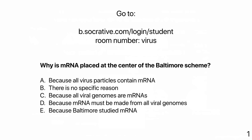Let's do a quick quiz. Why is mRNA at the center of the Baltimore scheme? The answer is D: because mRNA must be made from all viral genomes. 92% of you got that. Some said because all particles contain mRNA — that's not correct. As you see from the Baltimore scheme, those seven different genome types are what's in virus particles. It's because all viral genomes must make mRNA.